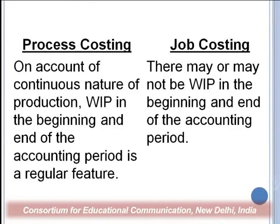The cost of one process is transferred to the next process in the sequence in process costing. But in job costing, the cost of one job is not transferred to another job — it is transferred to the finished stock account, as each job is treated as a separate cost unit. On account of the continuous nature of production, work-in-progress at the beginning and end of the accounting period is a regular feature in process costing. In job costing, there may or may not be work-in-progress.